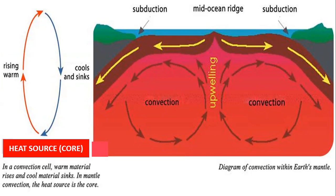Hot lower mantle material rises upward. As it rises, it cools. At the top of the mantle, it moves horizontally. Over time, it becomes cool and dense enough that it sinks back into the bottom of the mantle, and it then again travels horizontally. Eventually, the material gets to the location where warm mantle material is rising. The rising and sinking of warm and cooler material is called convection.